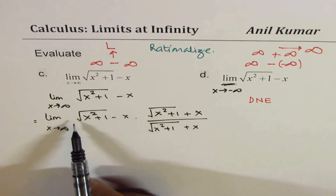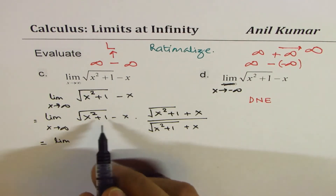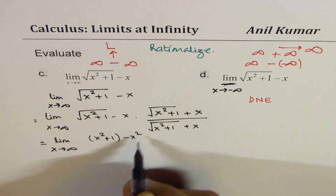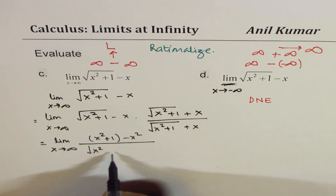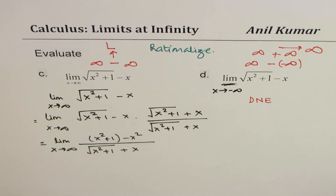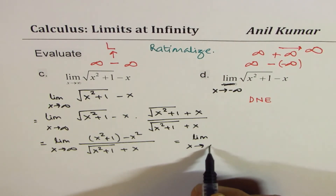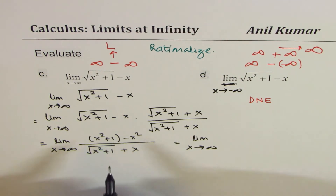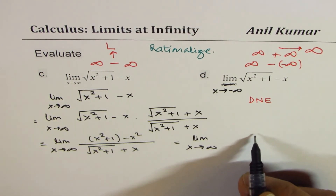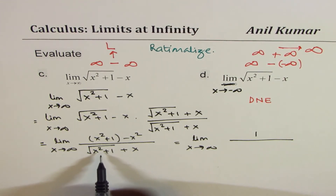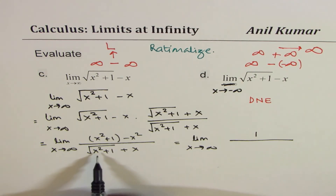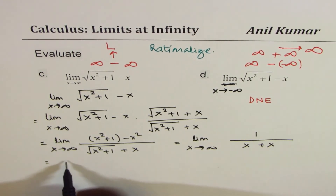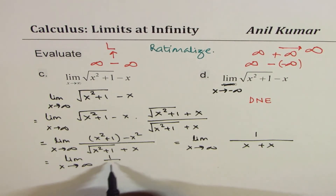When we do that, in the numerator we get the difference of squares: x squared plus 1 minus x squared. In the denominator we have square root of x squared plus 1 plus x. The x squared terms cancel, leaving 1 in the numerator. For large x, square root of x squared is absolute value of x, which equals x, so the denominator becomes x plus x, giving limit as x approaches infinity of 1 over 2x.